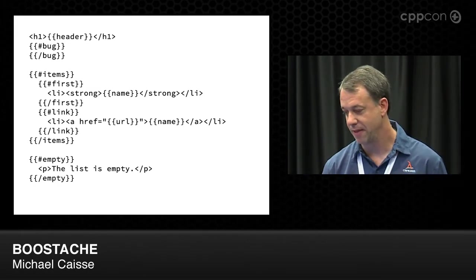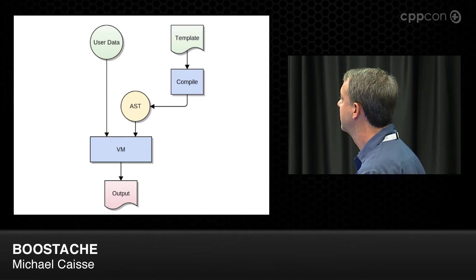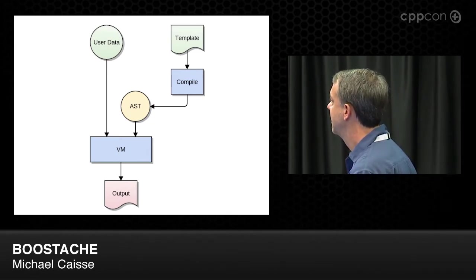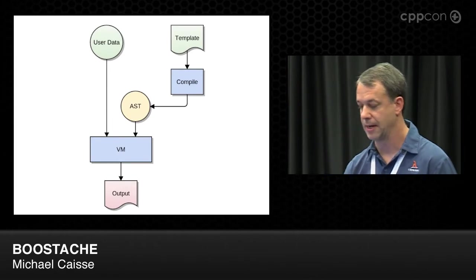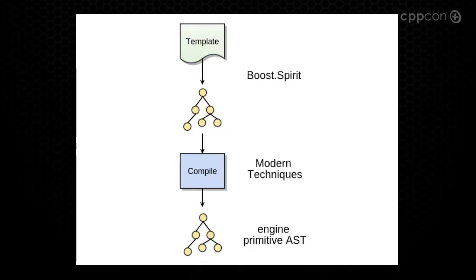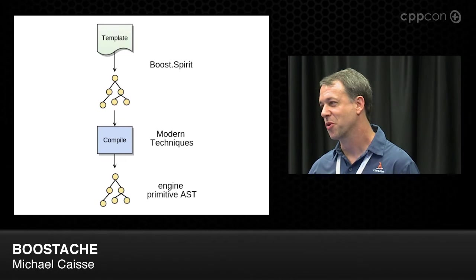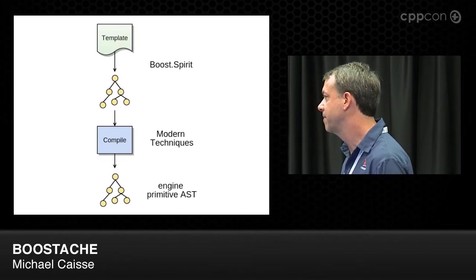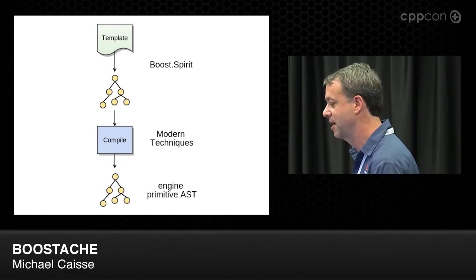What we came up with actually looks like this. The idea is that we have a template and some user data coming in. The template gets compiled into an AST using Boost Spirit, and then the user data and the compiled template data are run through a VM engine to produce output. The template text description goes through Boost Spirit, the output is an abstract syntax tree, and that AST is transformed using modern declarative techniques into an engine primitive AST.